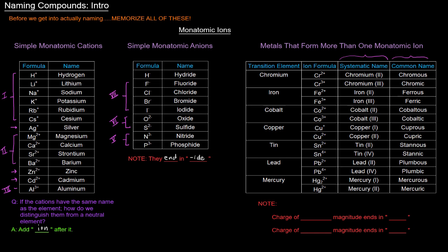And over here, these are the common names. The common names are used much less frequently than in the past. But what you'll notice is that, for example, with chromium, Cr2+ is called chromus and Cr3+ is called chromic. Now, what's basically happening is that we have these endings, us and ick, us, ick, us, ick, us, ick. And what we'll notice, though, is that the charge of the lower magnitude ends in OUS.